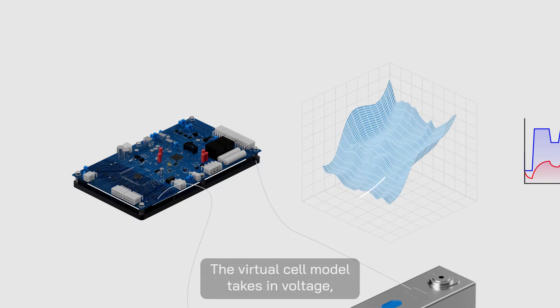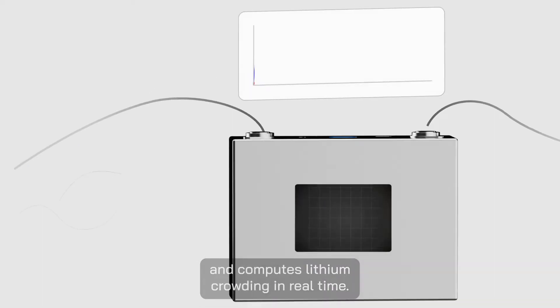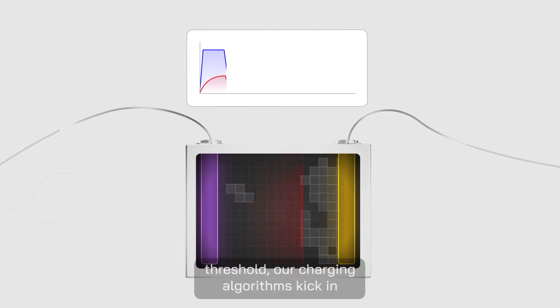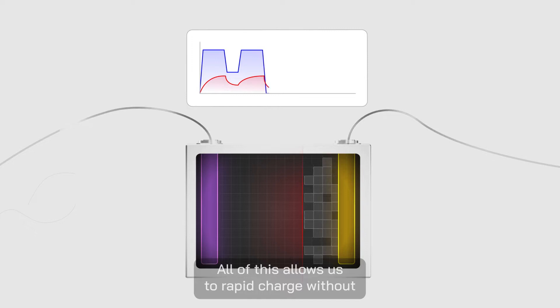The virtual cell model takes in voltage, current and temperature data from the BMS and computes lithium crowding in real time. If lithium crowding exceeds a critical threshold, our charging algorithms kick in and course-correct the charging profile to proactively prevent lithium plating. All of this allows us to rapid charge without damaging cell life.